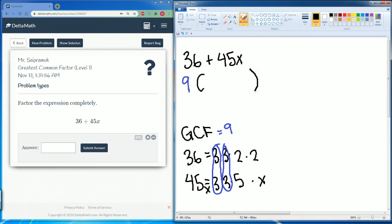Parentheses, what is left? Let's see what is left over from the 36. Once we pull out a 9, what is left is just 2 times 2, which is just 4. So we write a 4 here.